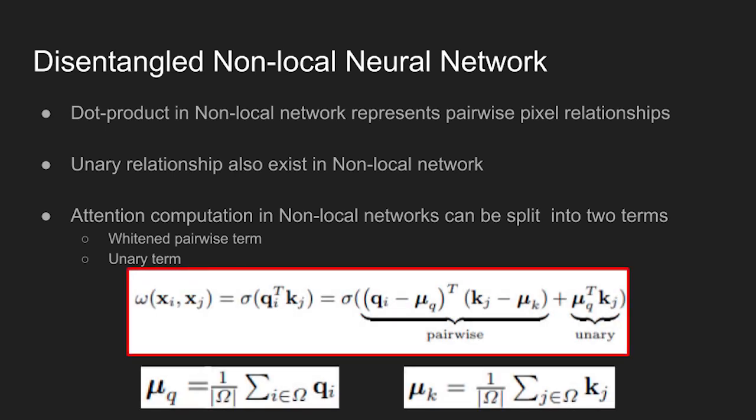In the equation, qi and kj represents the embedded query and key pixel, and sigma denotes the softmax function. The muq and muk are the average query and key embedding over all the pixels in the feature space. The whitened dot product term represents the pure pairwise relation between a query pixel i and a key pixel j, and the second term represents the unary relation where a key pixel j has the same impact on all query pixels i.